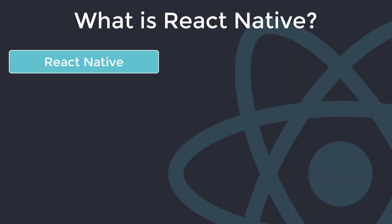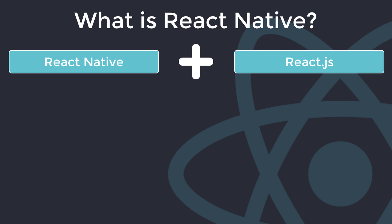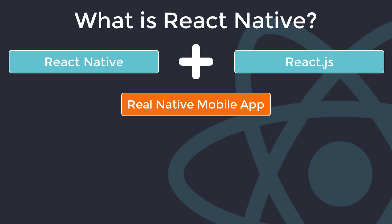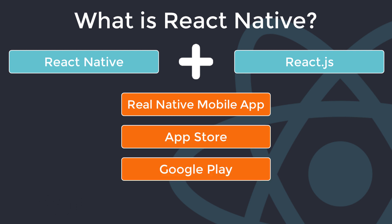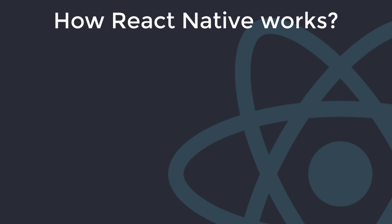So, if you combine React Native with React.js — which knows how to update and control a user interface — then you get everything you need to build a real native mobile app that you can upload to the App Store or Google Play. So, how does React Native work? As I mentioned, we build an app and our code typically looks something like this.